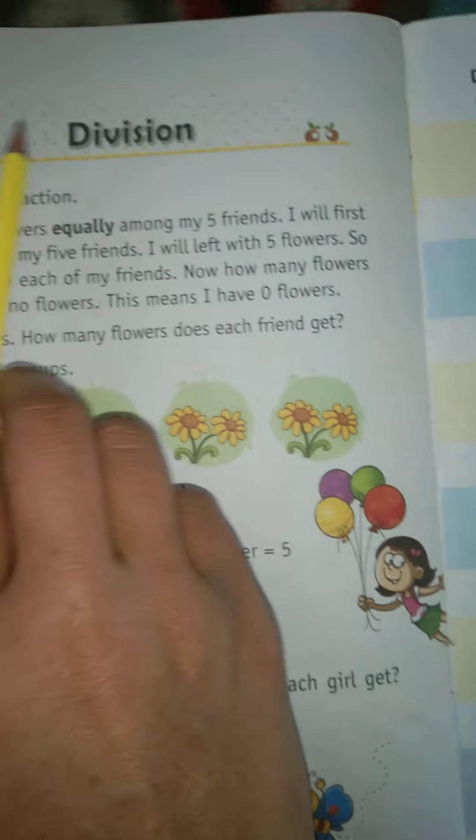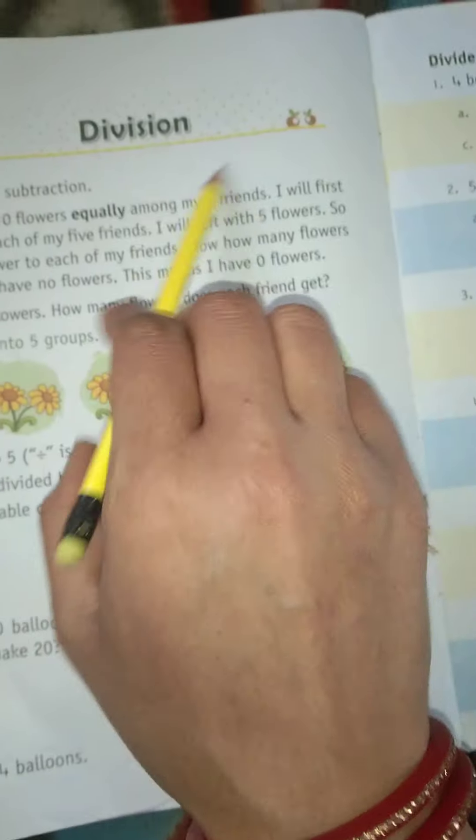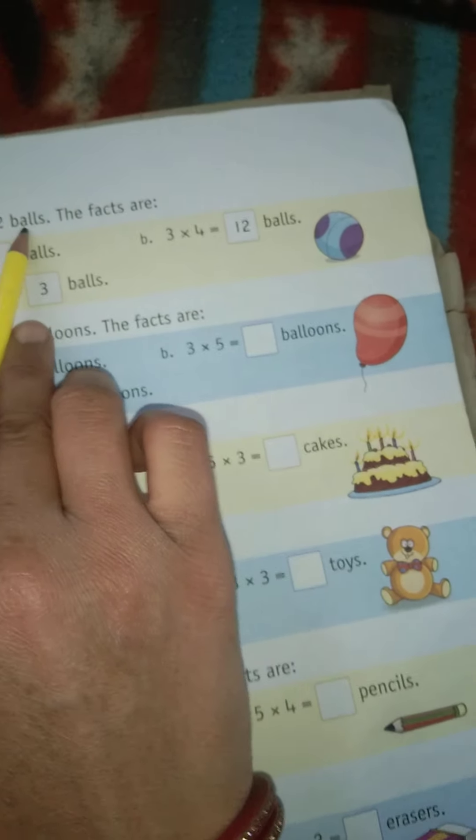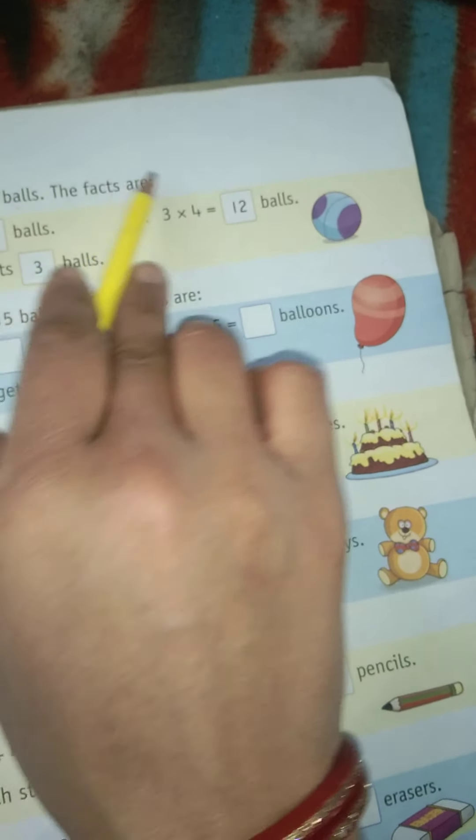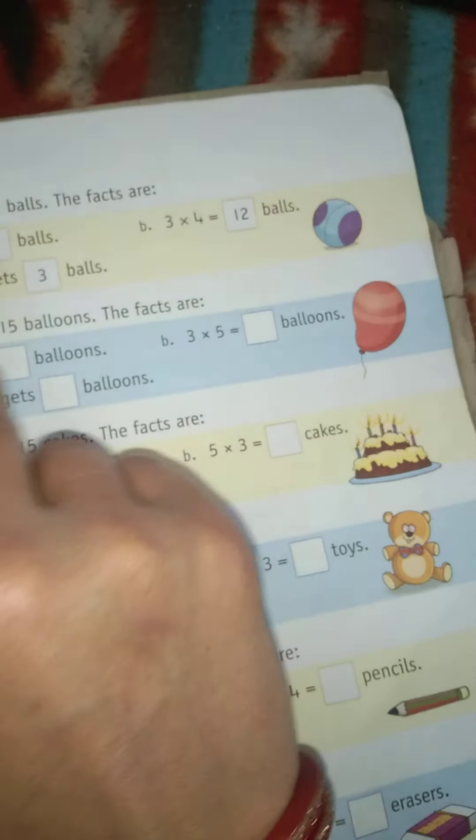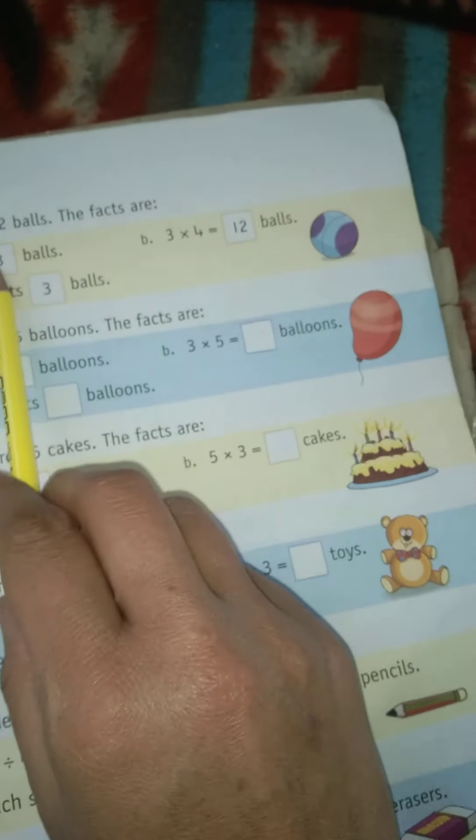Division, first class, chapter division. Divide 4 by... share 12 bolts. The facts are: 12 divided by 4 equals 3. 4 times 3 equals 12. Each boy gets 3 bolts.